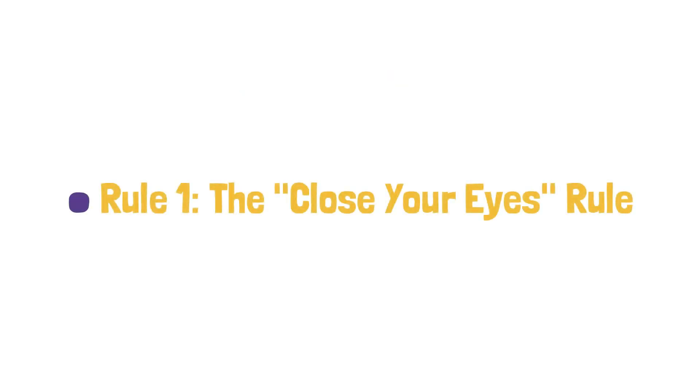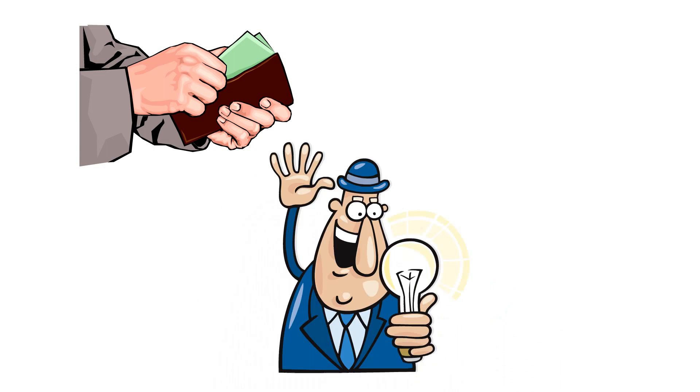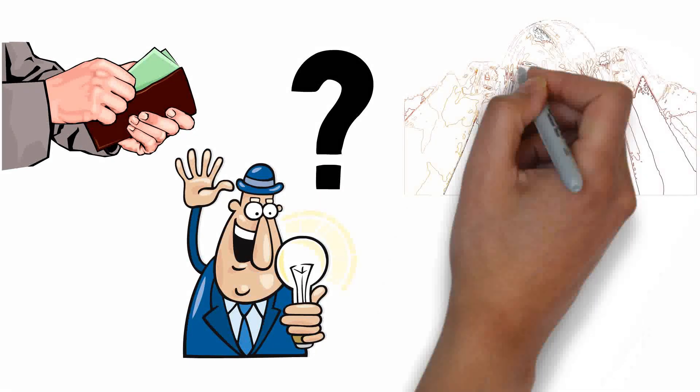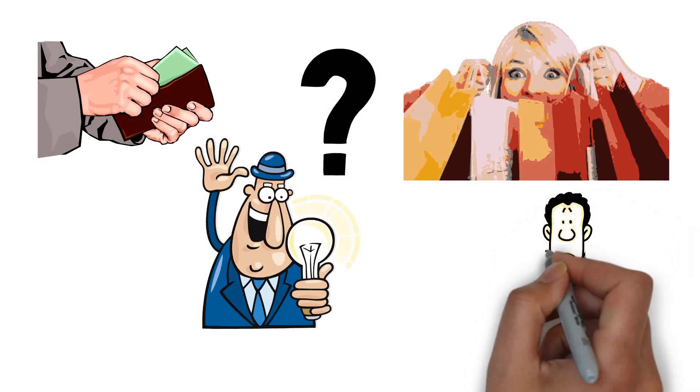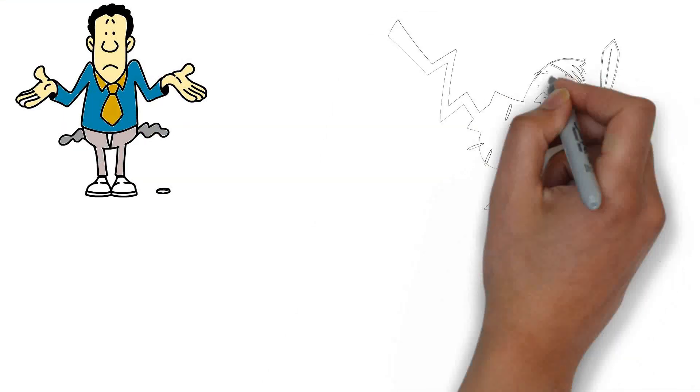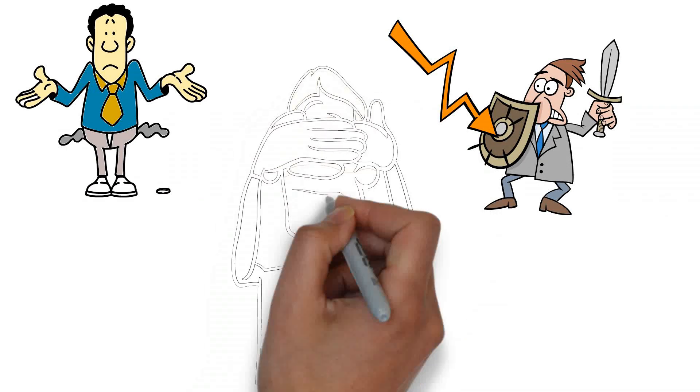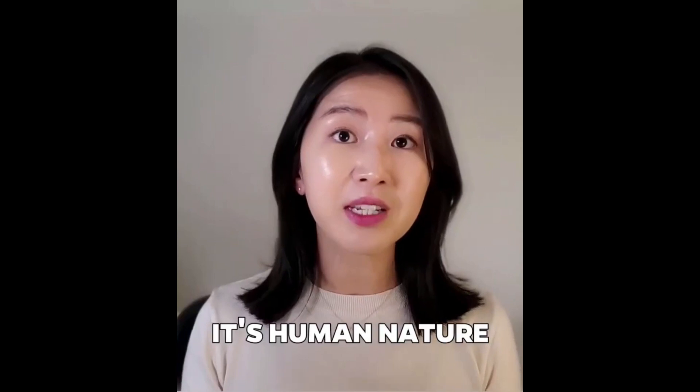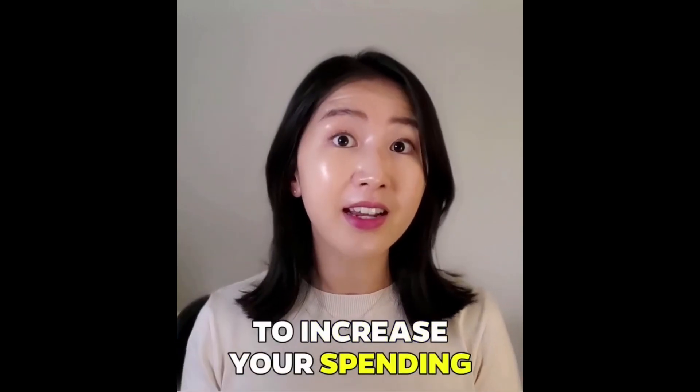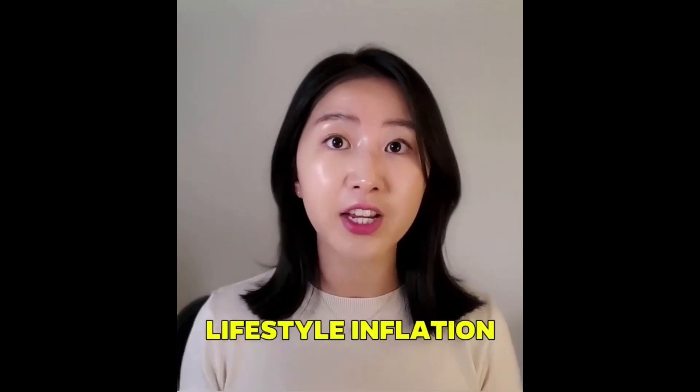Rule number one, the close your eyes rule. Have you ever been tempted to buy something you didn't need just because it caught your eye? That's the allure of impulse buying and it's a trap that can quickly lead to financial instability. Wealthy individuals have mastered the art of resisting these temptations.